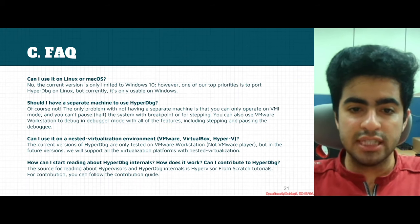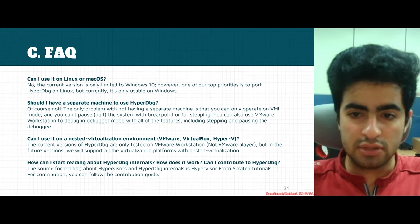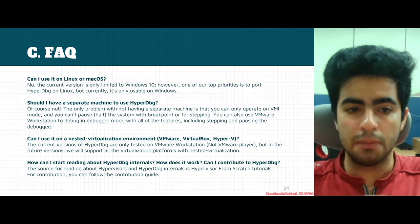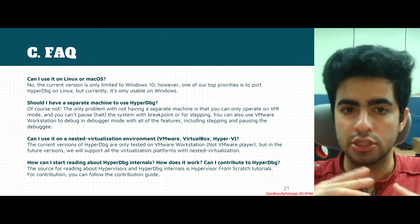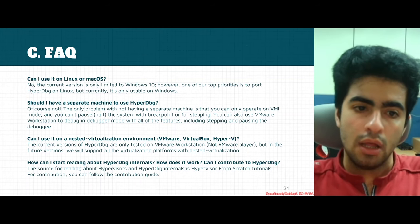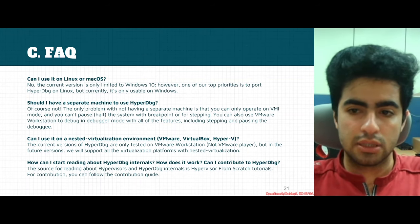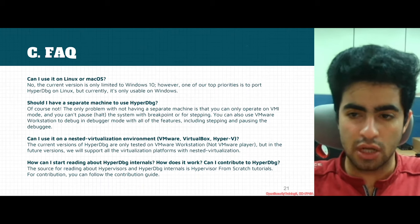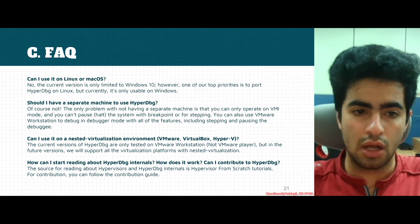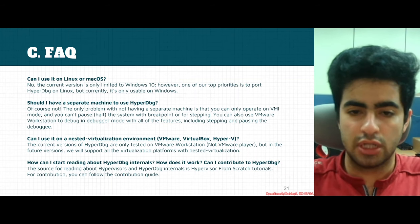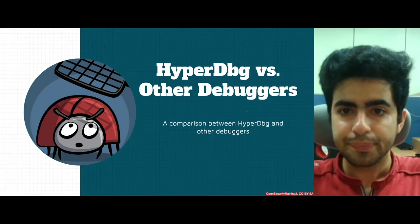How can you start reading about HyperDBG internals and contribute to the project? HyperDBG is an open-source project, so like all other projects you can go contribute on GitHub. The best source for learning the internals of HyperDBG is the Hypervisor from Scratch tutorial — you can search for it online. For contributing, follow the contribution guides on the GitHub page.